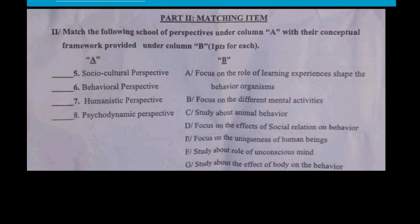Now let's look at the following school perspectives. Under column A, match with the conceptual framework provided under column B. The perspectives include: Socio-Cultural Perspective, Behaviorism, Humanistic, and Psychodynamic Perspective. These are different perspectives in the modern school of thought.